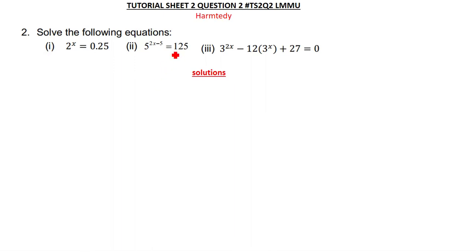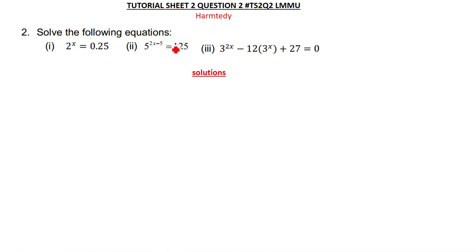Let's move on to the next question. This one says 5 to the power (2x minus 5) is equal to 125. To solve this, we try by all means to make the bases the same. We have 5 on the left, so we also need to make the right-hand side have 5 as the base.